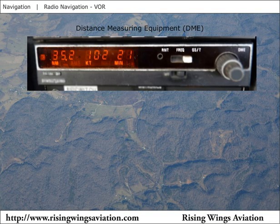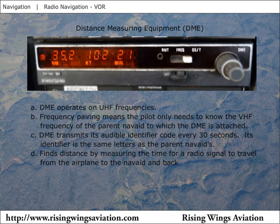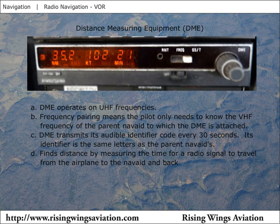DME, or distance measuring equipment, consists of stations on the ground and equipment in the airplane. DME operates in the ultra-high frequency, or UHF, band of frequencies. When a VOR is fitted with DME equipment, it is referred to as a VOR DME. Each VHF VOR frequency is paired with a specific UHF DME frequency, meaning the pilot only needs to use the VOR frequency and does not need to be concerned with the DME's UHF frequency.